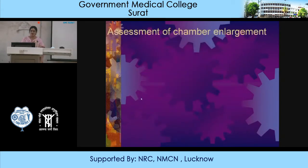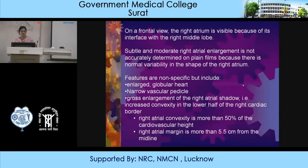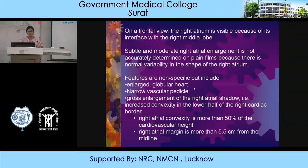Assessment of chamber enlargement — right atrial enlargement is less commonly enlarged and harder to delineate on chest radiograph than left atrial enlargement. Causes include raised right ventricular pressures, pulmonary arterial hypertension, cor pulmonale, valvular diseases like TR and TS, ASD, atrial fibrillation, and dilated cardiomyopathy. Features include enlarged globular heart, narrow vascular pedicle, gross enlargement of the right atrial shadow with increased convexity in the lower half of the right cardiac border. Objective criteria: right atrial convexity more than 50% of cardiovascular height, and right atrial margin more than 5.5 cm from the midline.